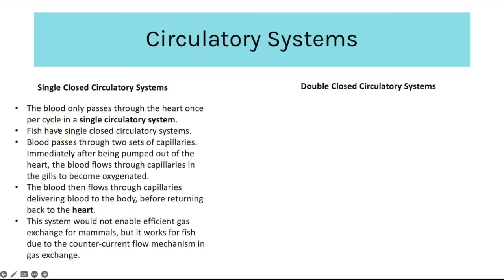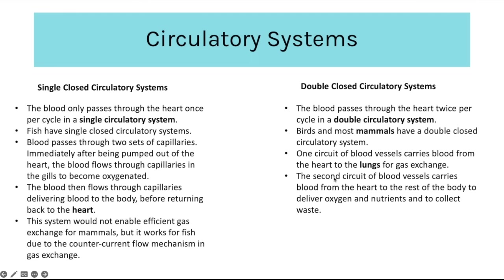This single system would not enable efficient gas exchange for mammals but does work for fish because of the counter current flow mechanism. In a double closed circulatory system the blood passes through the heart twice per cycle and takes two separate circuits — seen in birds and most mammals. One circuit carries blood from the heart to the lungs for gas exchange, and the second circuit carries blood from the heart to the rest of the body to deliver oxygen and nutrients and collect waste.